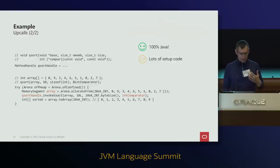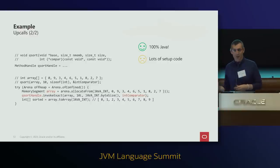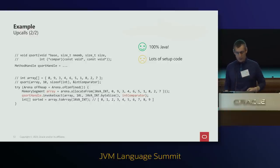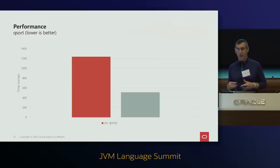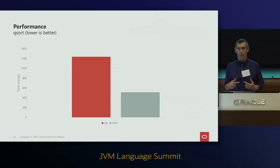Here's how you use it: inside a try-with-resources, create a memory segment as an array on the Java heap, pass it and the int-comparator memory segment (the function pointer) to the qsort method handle, and get back the sorted array which you can map back to Java. It's still 100% Java code. There is setup code — method handles, function descriptors — but the performance is very good. FFM API upcalls are almost three times faster than equivalent JNI code.